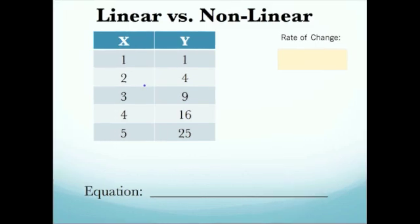Move on to our third table. We have an ordered pair set of 1, 1; 2, 4; 3, 9; 4, 16; and 5, 25. If we start looking at our changes for x's, the first one is 1, second one is 1, next one is 1, next one is 1. We check out our y's. From 1 to 4 is 3.